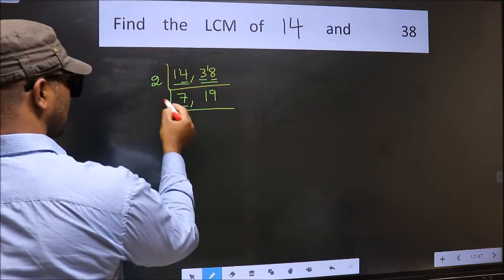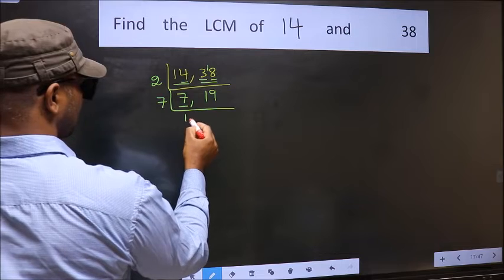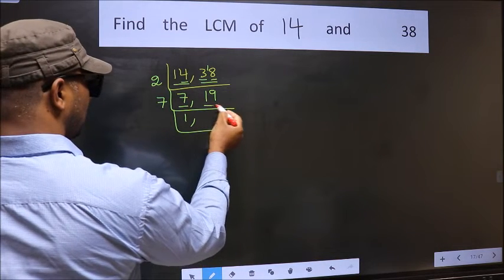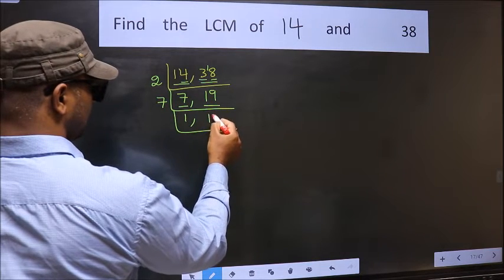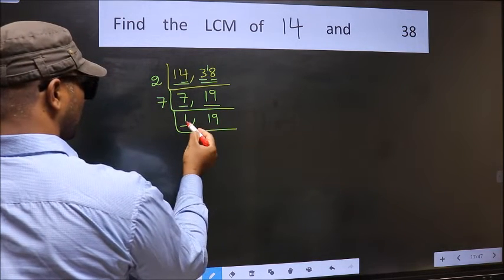Now here we have 7. 7 is a prime number. So 7 ones, 7. The other number 19, not divisible by 7. So we write it down as it is. We got 1 here.